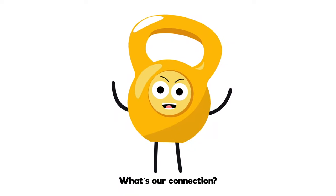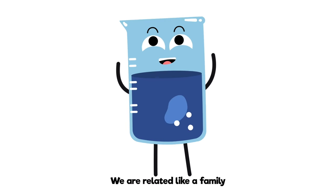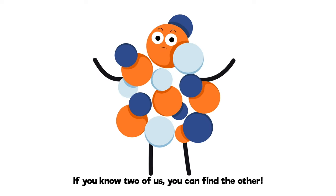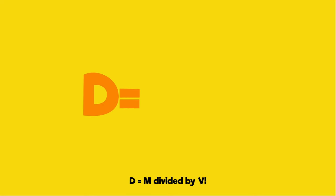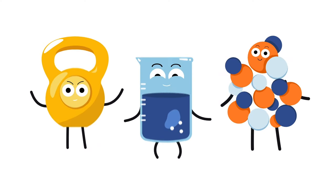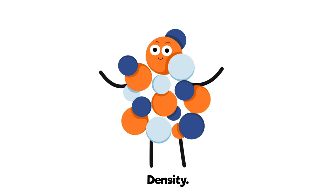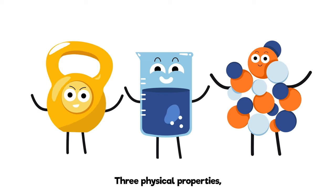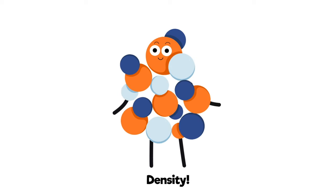What's our connection? Excellent question. We are related like a family. If you know two of us, you can find the other. D equals M divided by V. Yeah, D equals M divided by V. Mass, volume, density. Mass, volume, density. Three physical properties. Mass, volume, density.